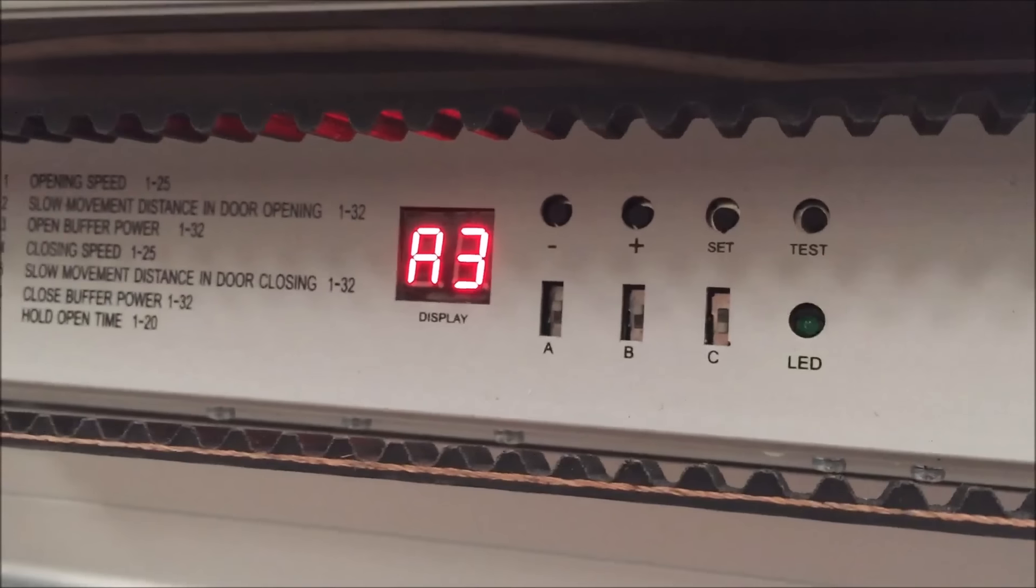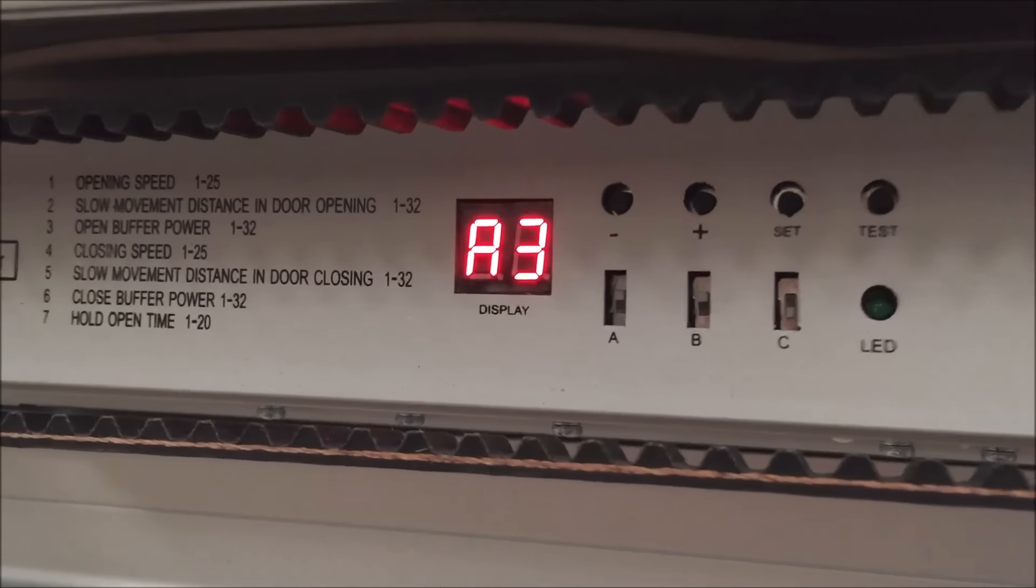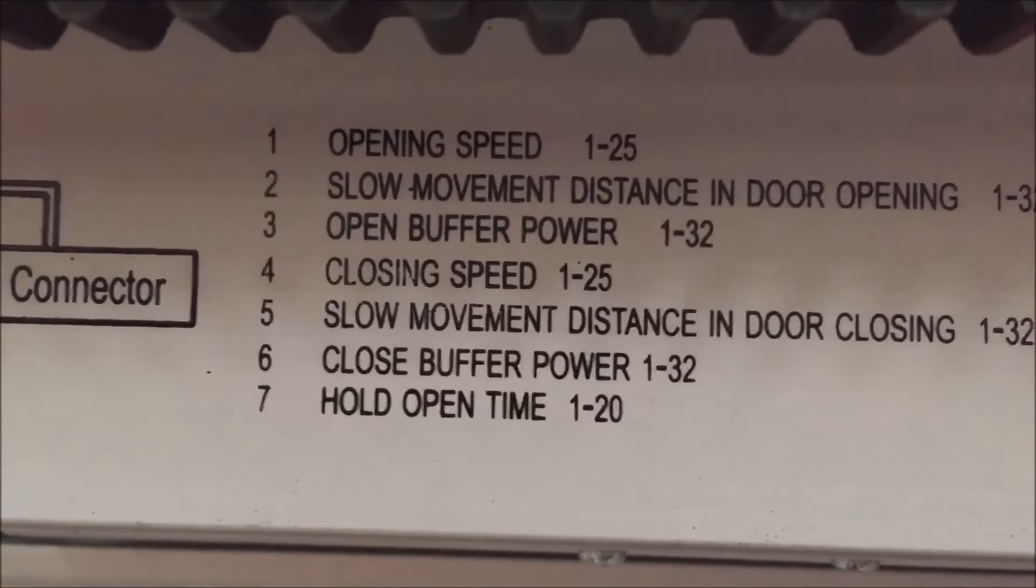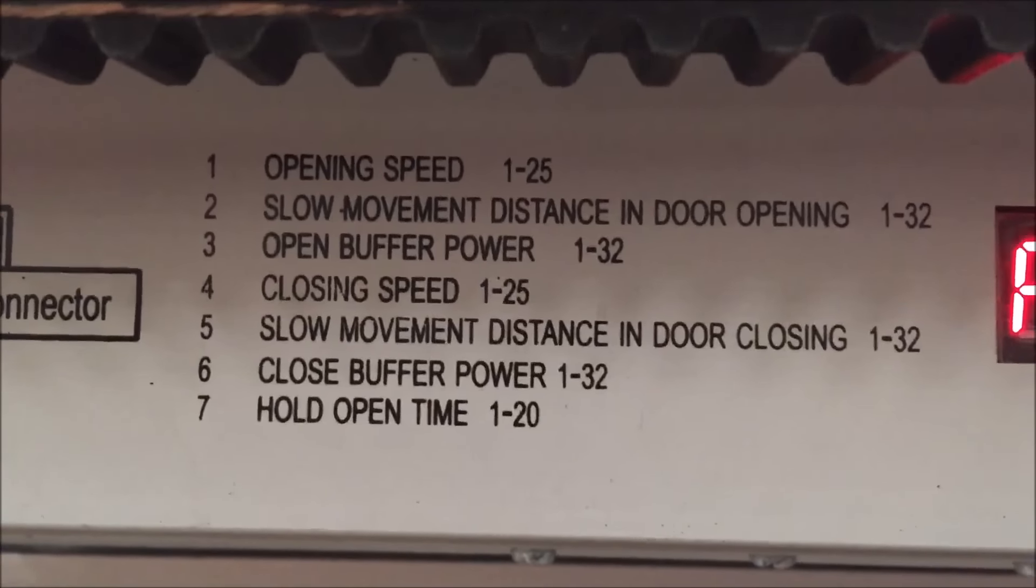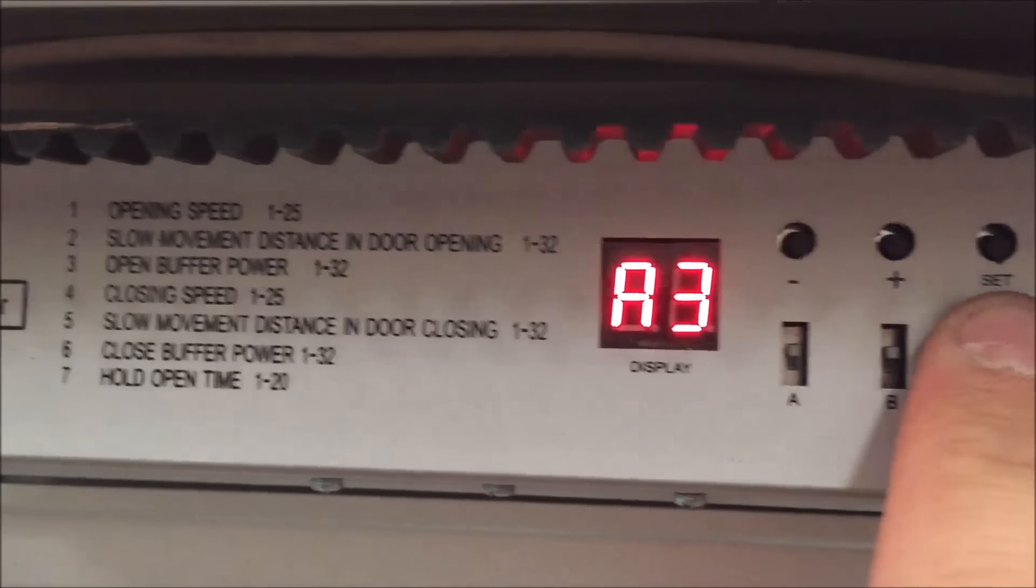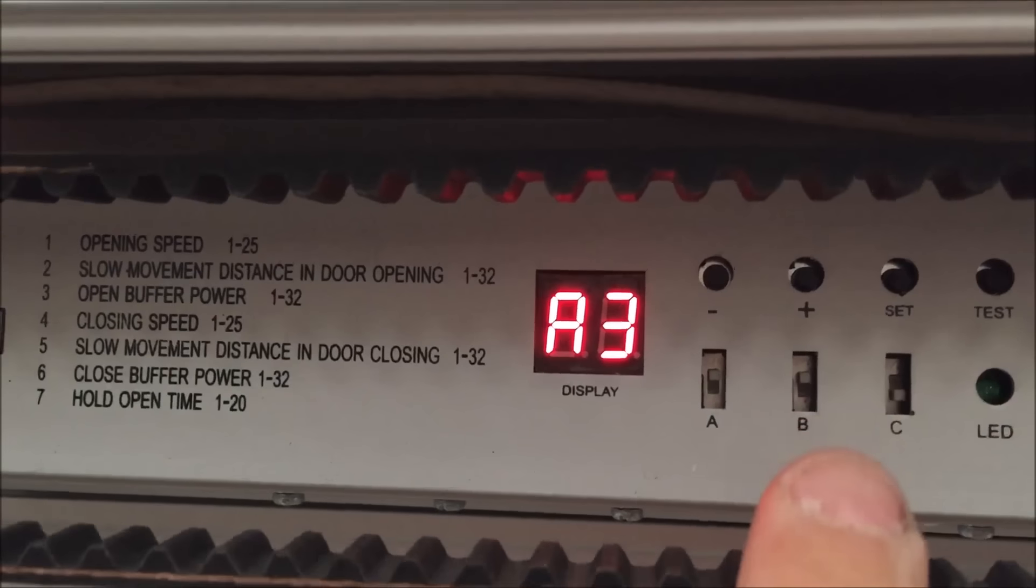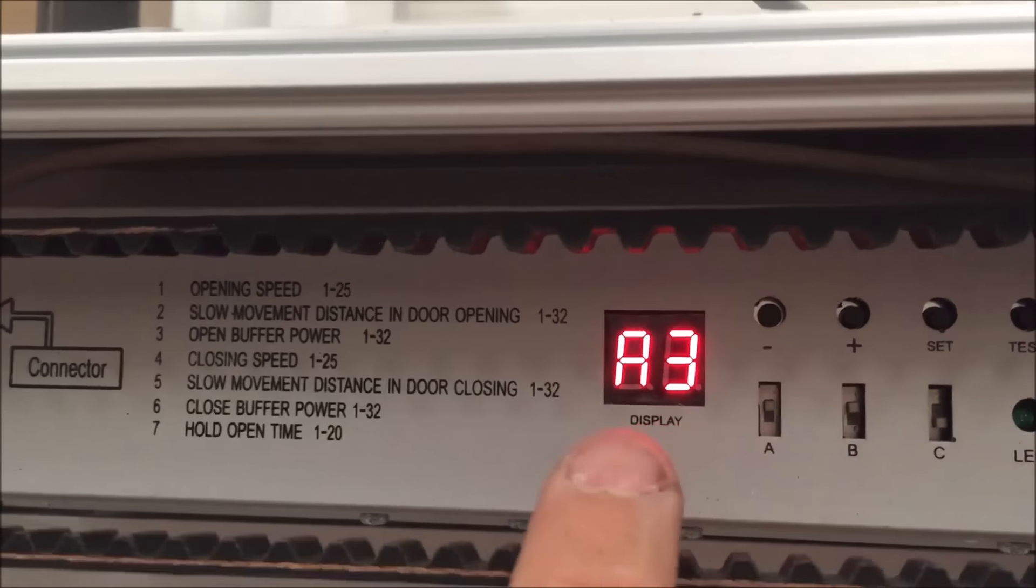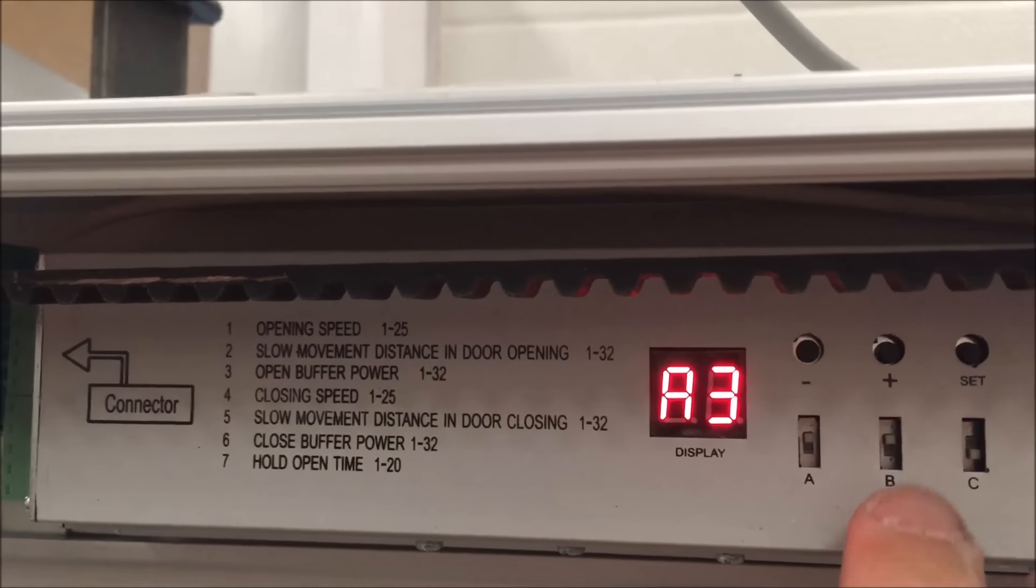Vamos a programar nuestra central para nuestra puerta automática de cristal. Aquí tenemos los menús que podemos acceder desde la letra o pulsando el botón set y veremos cada uno de los valores dentro de este menú con la tecla más y la tecla menos.